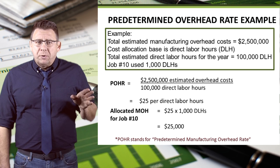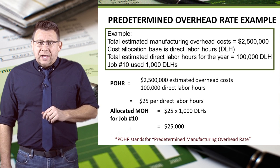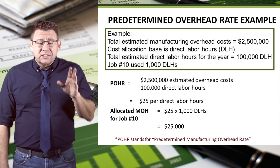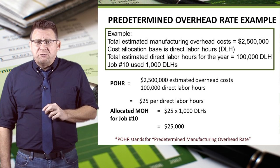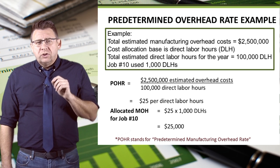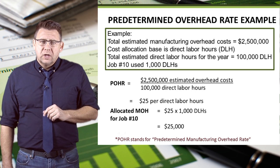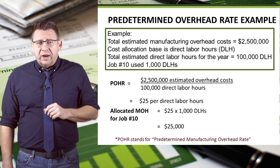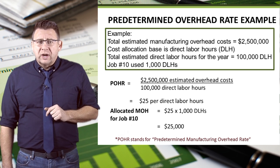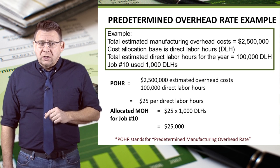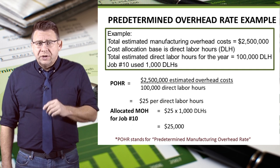Let's look at an example of how to calculate and use the predetermined overhead rate. A company estimates that its total manufacturing overhead for the upcoming year will be $2.5 million. It estimates that it will use 100,000 direct labor hours to complete all the jobs. So the predetermined overhead rate is $2.5 million divided by 100,000 direct labor hours, which equals $25 of manufacturing overhead per direct labor hour.